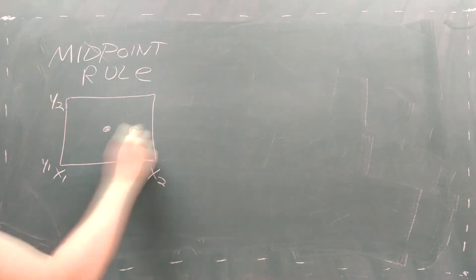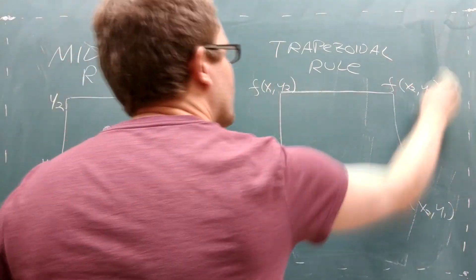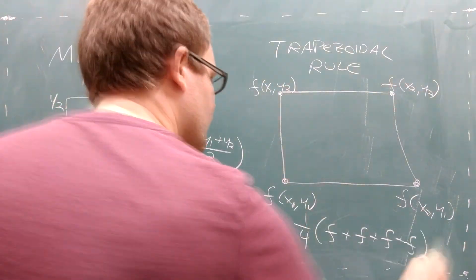Again, we have a choice of method to use. If we use the midpoint rule, we evaluate the function at the middle of each square. If we use the trapezoidal rule, we evaluate the function at each corner of the square and average the values.